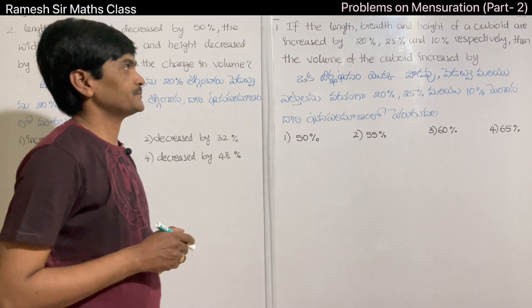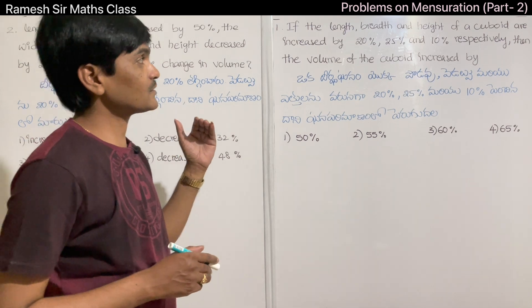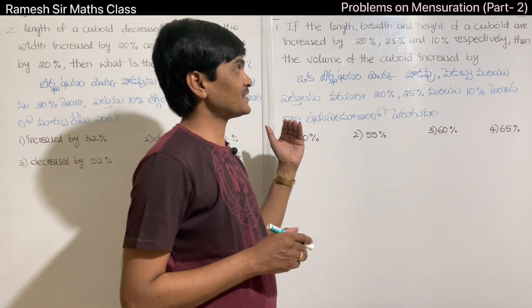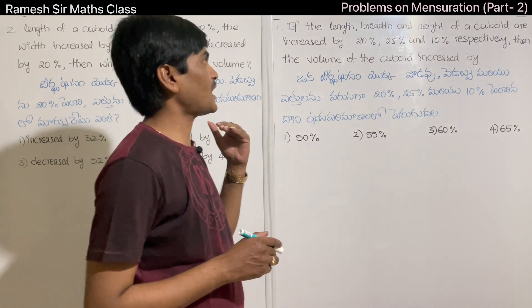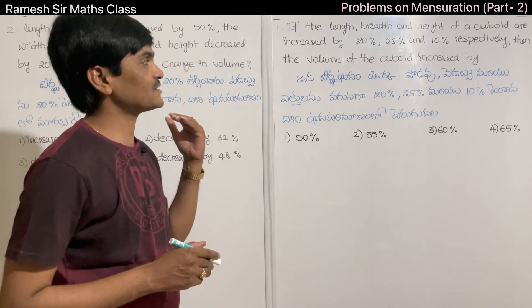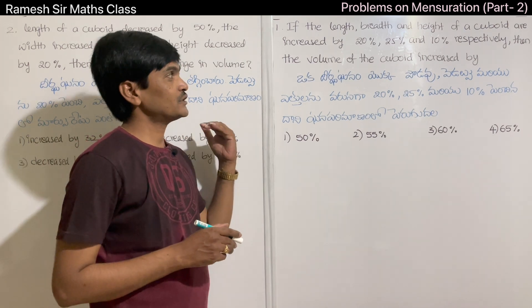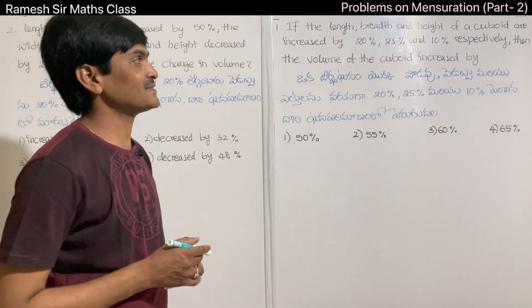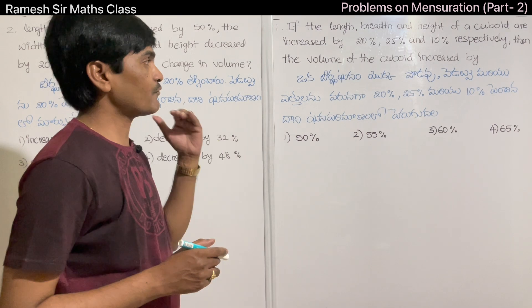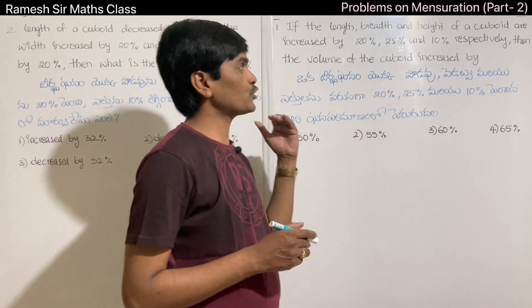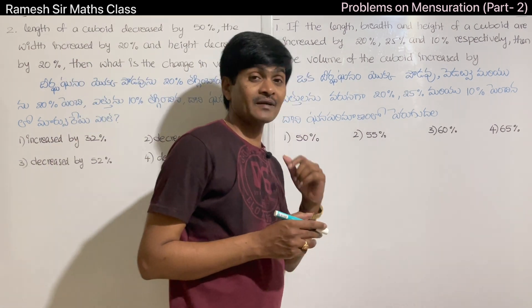Problem 1: If the length, breadth and height of a cuboid are increased by 20%, 25% and 10% respectively, then the volume of the cuboid is increased by how much?